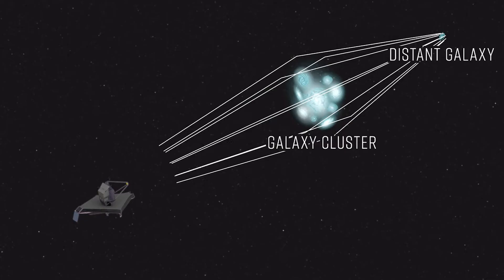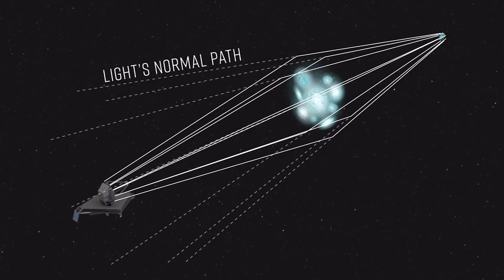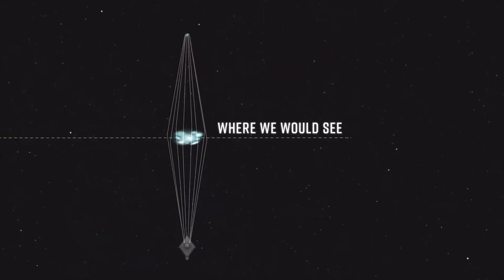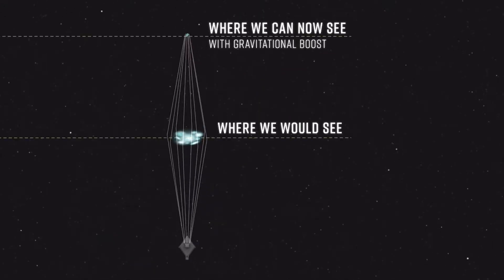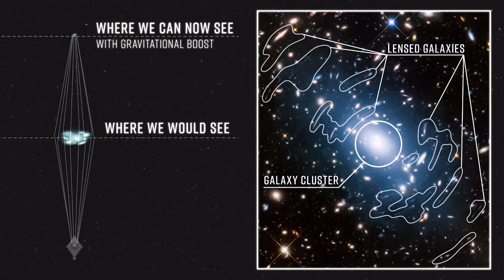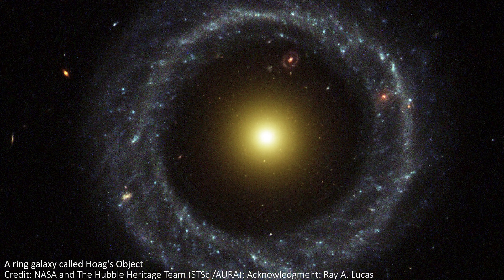It's important to remember that the lensed galaxy, also known as the source galaxy, isn't really a ring — we're just seeing it distorted from our point of view. Its light is warped, but the galaxy itself isn't. If we lived in a different part of the universe and didn't have another galaxy between us and the source galaxy, we would see it simply as a distant spiral galaxy. Some galaxies are rings, but this isn't one of them.